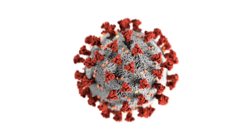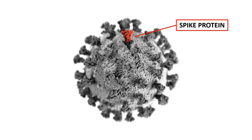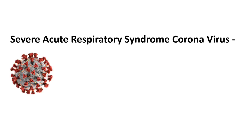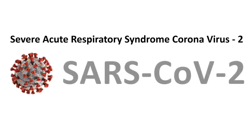Coronavirus is a spherical virus with several spike-like proteins on its surface. Because of this crown-like structure, it got the name coronavirus. Novel coronavirus, as the name suggests, is a new variant of the coronavirus with a high level of transmissibility or infectivity. The coronavirus study group of the International Committee on Taxonomy of Viruses formally named the new coronavirus as Severe Acute Respiratory Syndrome Coronavirus 2, that is SARS-CoV-2.